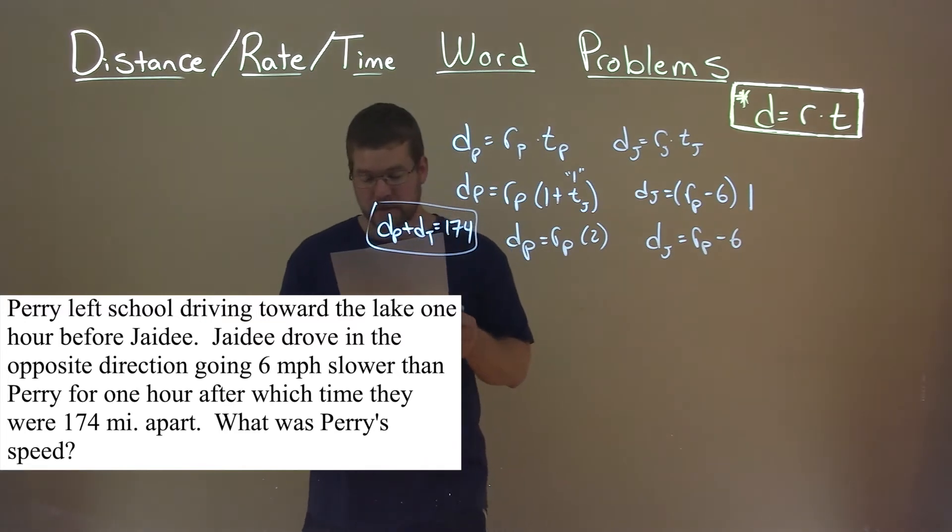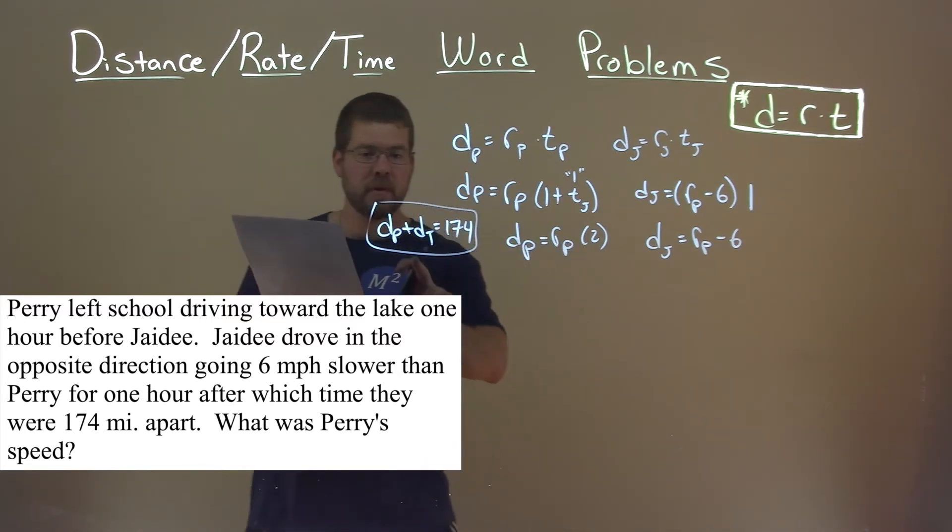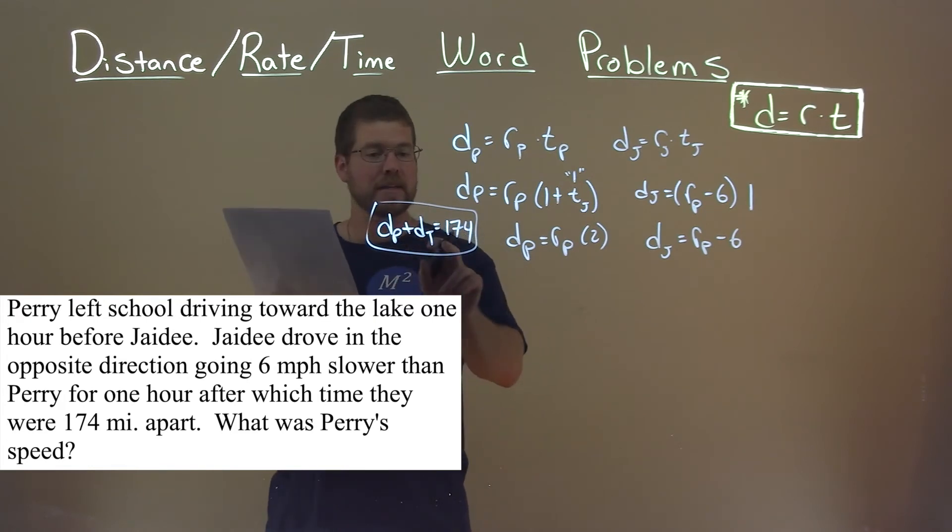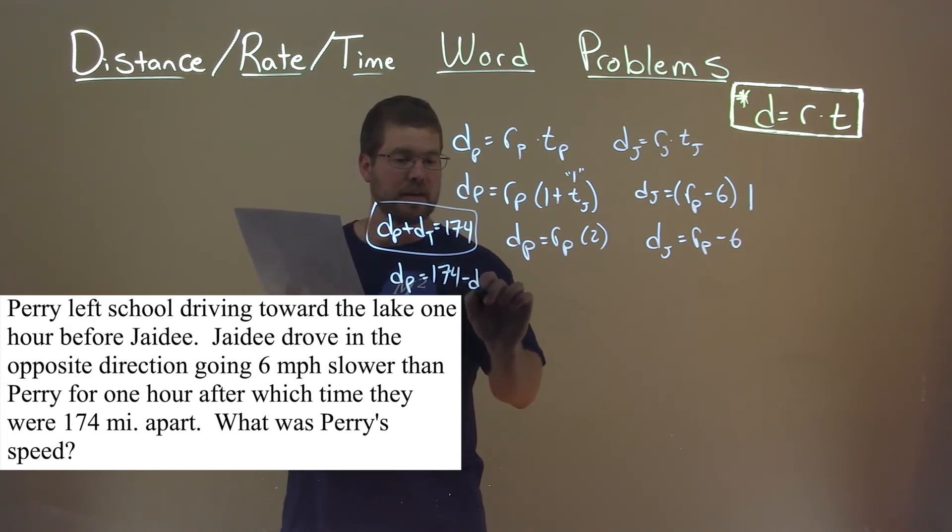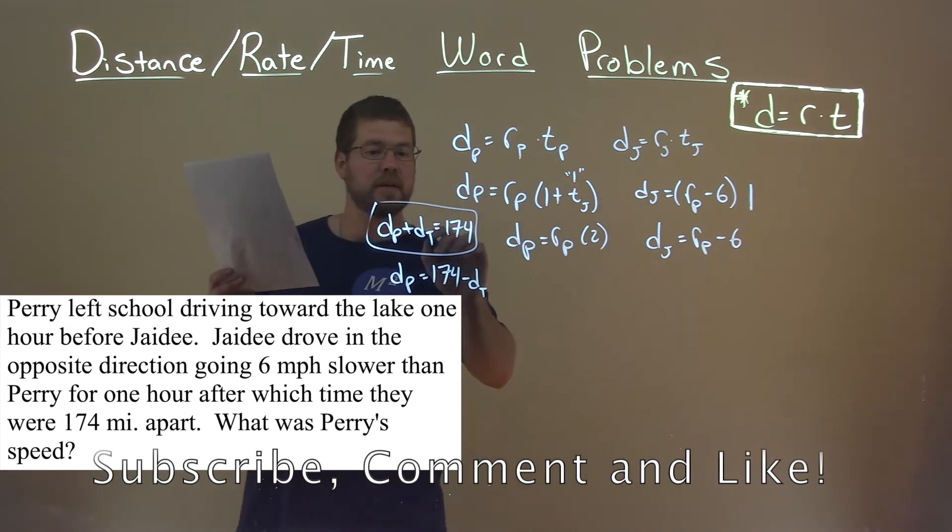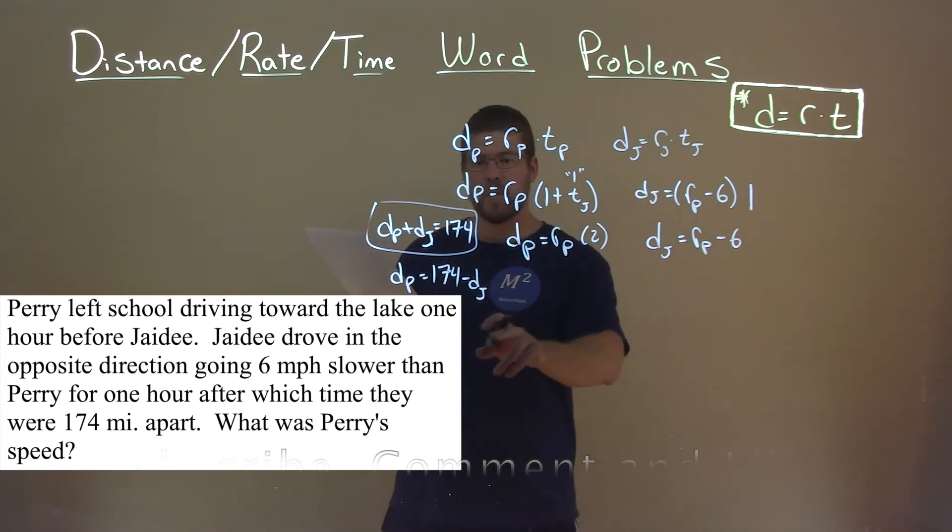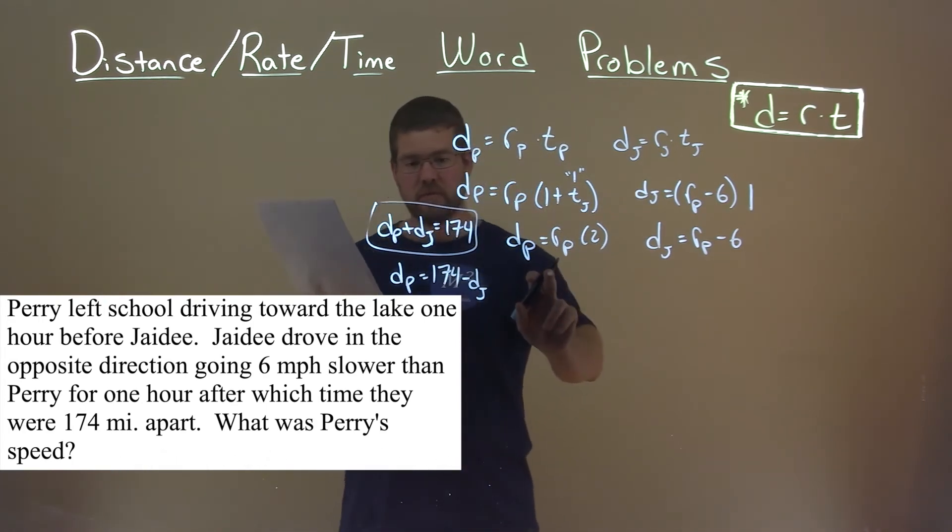And this part gets a little tricky. We can rewrite D of P equal to, if we subtract D of J to both sides, D of P is equal to 174 minus D of J. Distance of JD. And so we can use that and actually plug it into this equation right here.